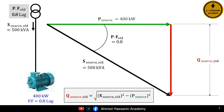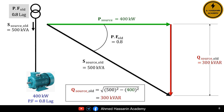So we can calculate the reactive power of the source before installing the capacitor, that is, before improving the power factor. Q source old is equal to the square root of (S source old)² minus (P source)², which equals the square root of (500 kVA)² minus (400 kW)², which equals 300 kilovars.